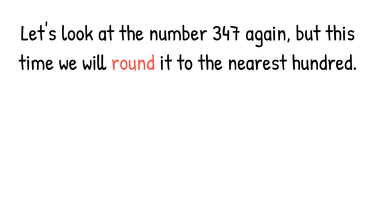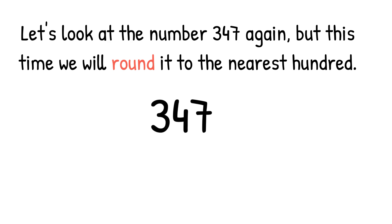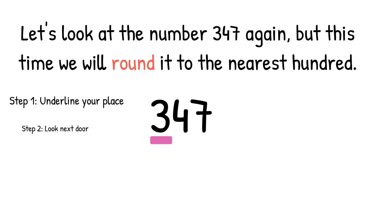Let's look at the number 347 again, but this time we will round it to the nearest 100. Step 1: underline your place. Since we're rounding to the nearest 100, we're going to underline the digit in the hundreds column, which is the 3. Step 2: look next door. So we're going to draw a little arrow from the hundreds column to the tens column.